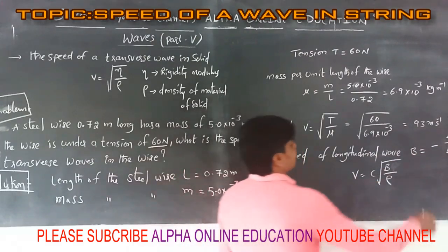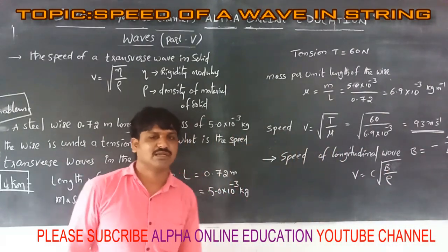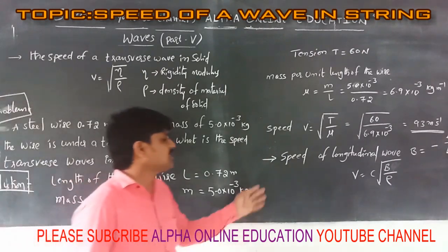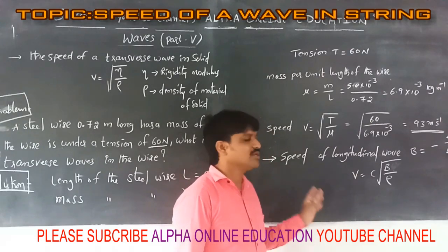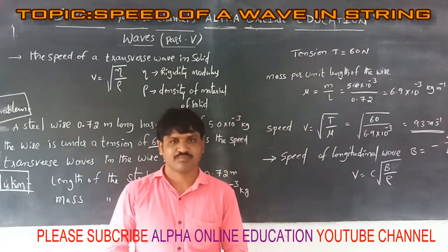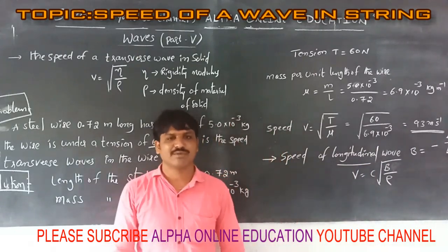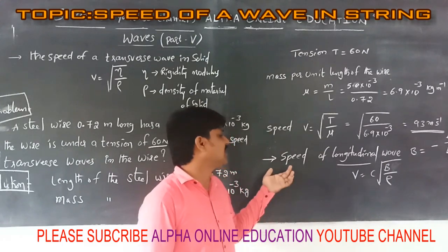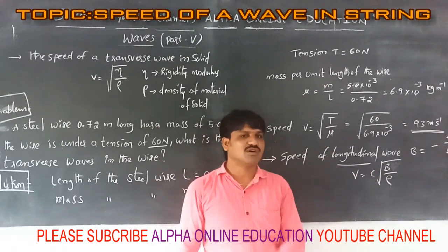The speed of the transverse wave in the wire is 93 meters per second. Now, the speed of a longitudinal wave in a medium is determined using the bulk modulus. When longitudinal waves propagate in a medium, the pressure changes and the density also changes. Therefore, the speed of a longitudinal wave equals the square root of the bulk modulus B divided by the density rho.